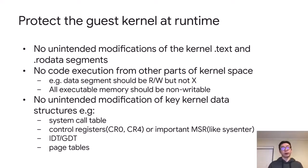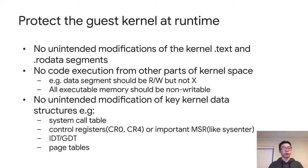Third, we want to make sure there are no unintended modifications of key kernel data structures. For example, the system call table — a table of function pointers — if hackers replace it with something else, users may get monitored or hacked without realizing it. Another example is control registers like CR0 or CR4. There is a write-protect bit in CR0; if you turn it off, the kernel will allow writes to read-only memory. There are also important MSRs — for example, the SYSENTER MSR can be used to hijack system calls. Similarly, the IDT (interrupt descriptor table) and GDT (global descriptor table) both contain function pointers that we want to ensure never get overwritten.